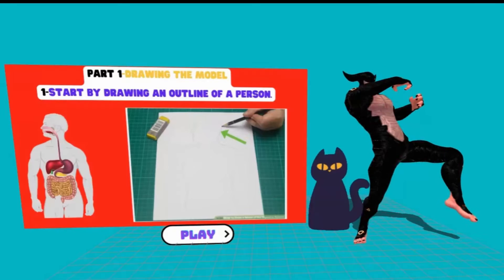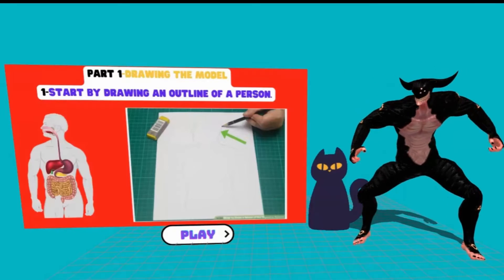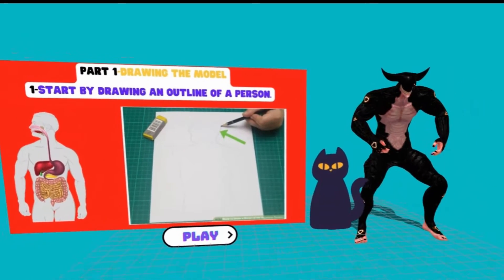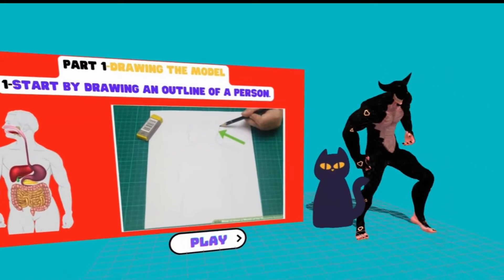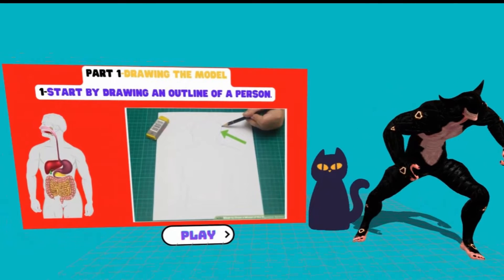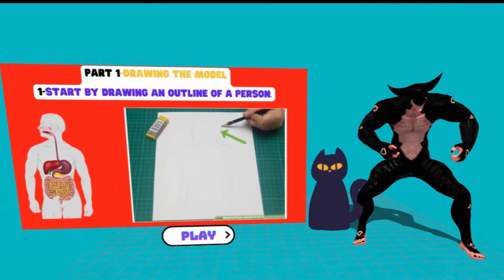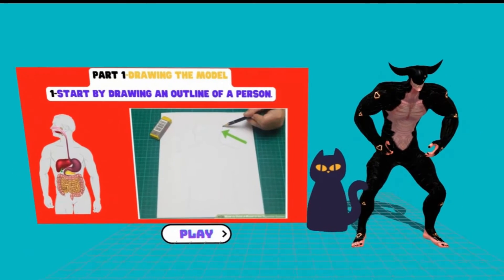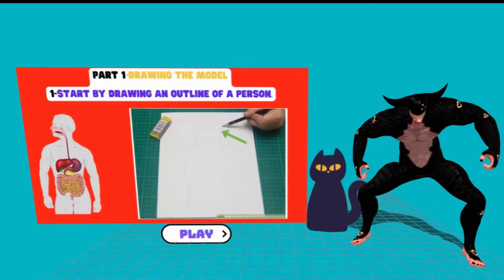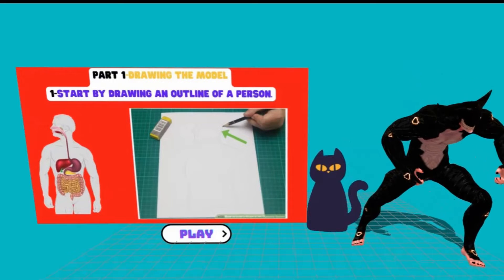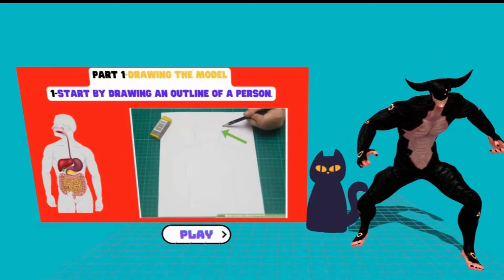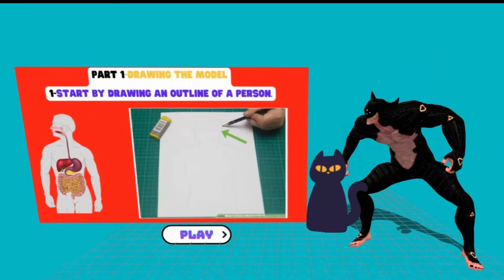Part 1: Drawing the Model. Step 1: Start by drawing an outline of a person. You only need to draw the head and torso. Make sure you are using a pencil rather than a pen so that you can erase if necessary. This outline should take up most of the space on your paper.